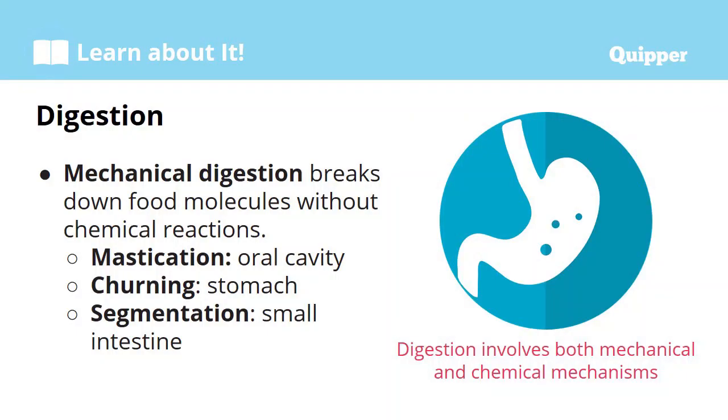Let's talk about mechanical digestion first. Mechanical digestion refers to the simple physical actions done by our body on food. Chewing is actually a physical or mechanical digestion. Digestion first happens here, and we need to make food smaller so it's easier to swallow. However, even after going to your stomach, the size of what we chewed is not enough — we need to make it smaller until it reaches cellular size so that our cells can actually be fed. Examples of mechanical digestion include churning, segmentation, and mastication, which is simply chewing in your oral cavity.